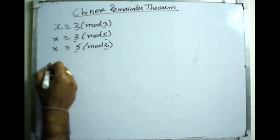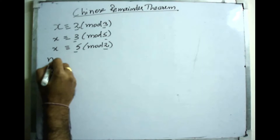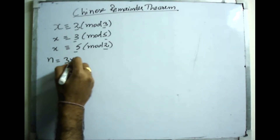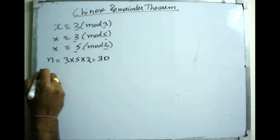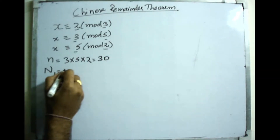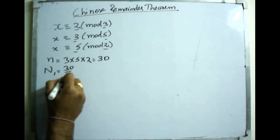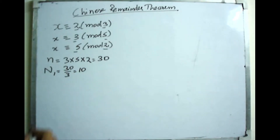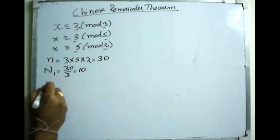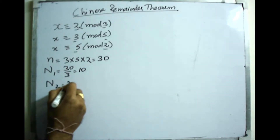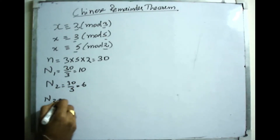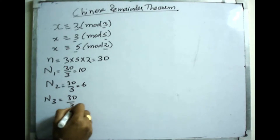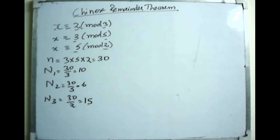The first step is to find N = 3 × 5 × 2 = 30. From this, N1 = 30/3 = 10, N2 = 30/5 = 6, and N3 = 30/2 = 15.